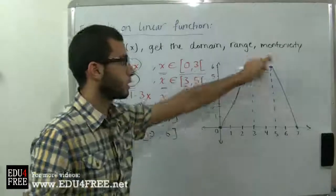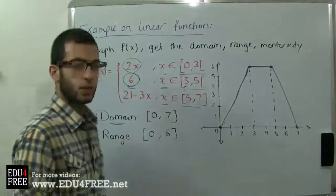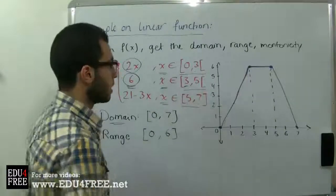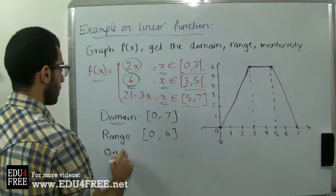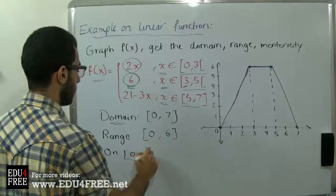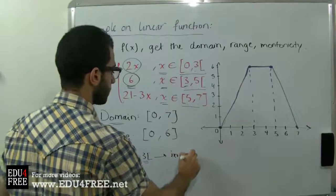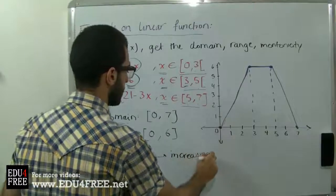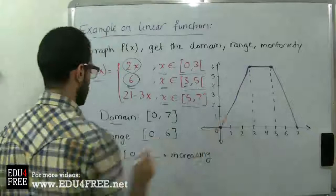Then the monotonicity: the parts where the function increases or decreases or stays constant. On the interval from 0 to 3, where 3 is not included, the function increases. Then it stays constant on the interval of 3 to 5, and 5 is not included.